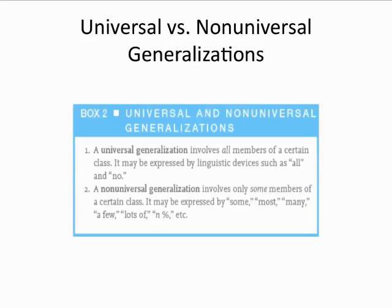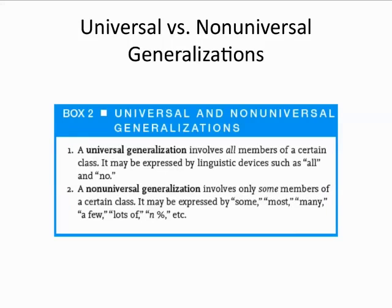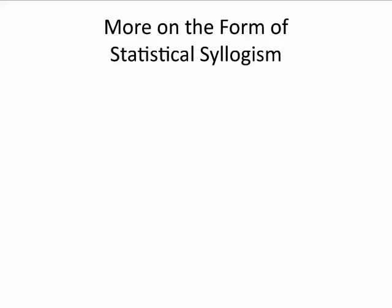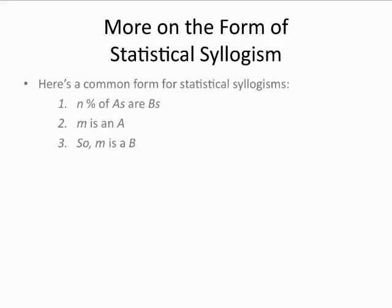Let's recall the difference between these two types of generalization. A universal generalization involves all members of a certain class and may be expressed by linguistic devices such as 'all' and 'no.' A non-universal generalization only involves some members of a certain class and is often expressed by words such as 'some,' 'most,' 'many,' 'a few,' 'lots of,' 'n percent,' etc. We now know there is a common form for statistical syllogisms: n percent of A's are B's — where the percentage may be substituted by other quantifiers such as 'many,' 'some,' etc. — M is an A; conclusion, so M is a B.